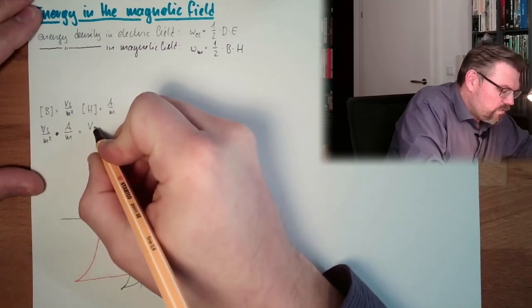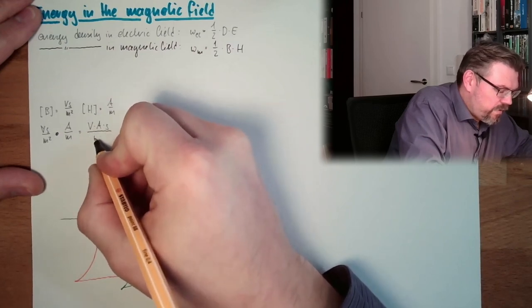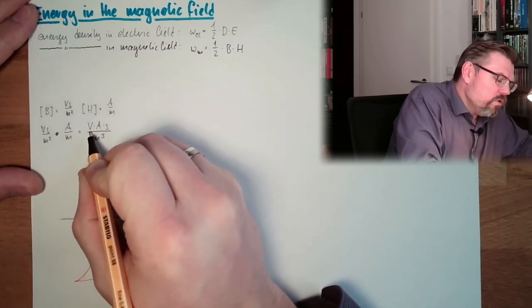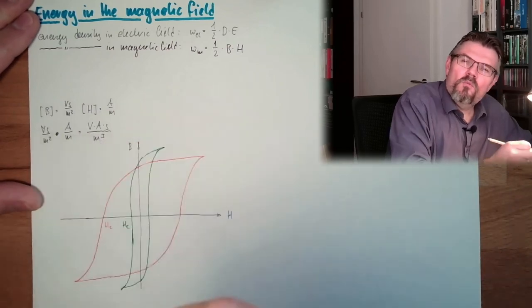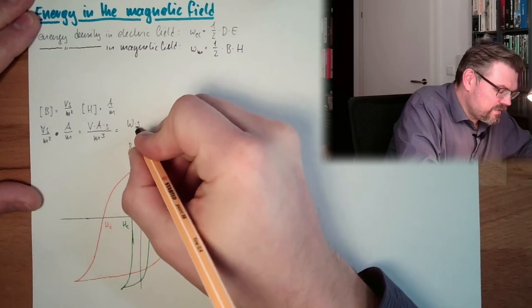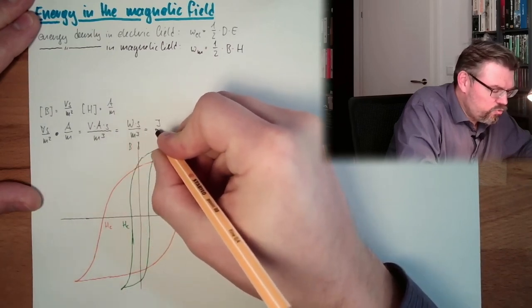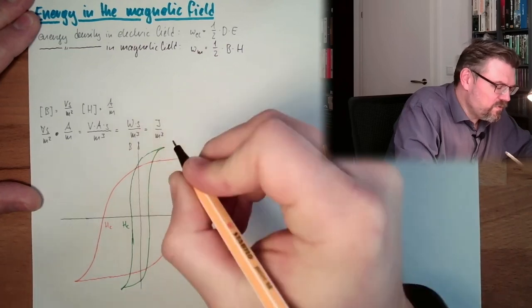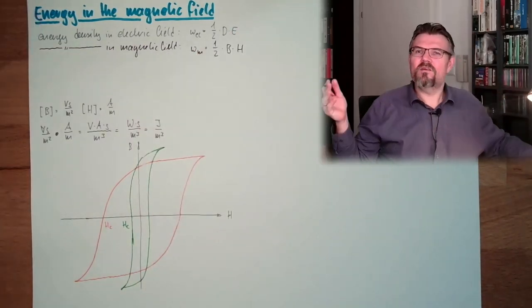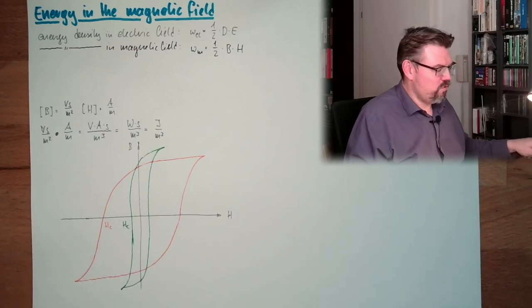Volt seconds per square meter times ampere per meter. It's volt multiplied by amps multiplied by seconds per cubic meter. Volt multiplied by ampere was watts. So we have watt seconds per cubic meter. And this is actually joule per cubic meter. So it's the energy density, the units are fitting. So this is true.